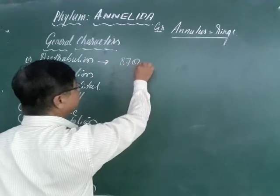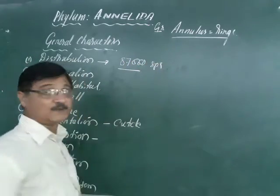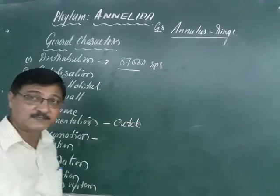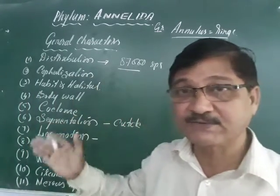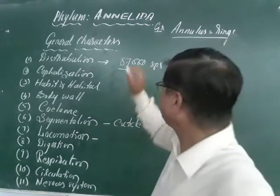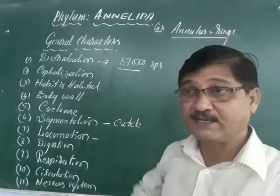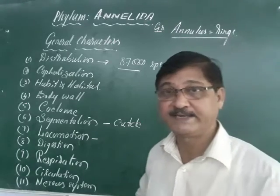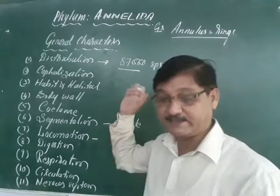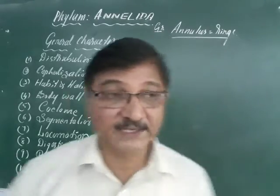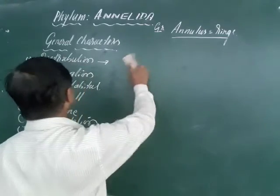Their number ranges from more than 87,000 species all over the world, including India. We are able to identify up to 87,000 so far; there are still many unidentified and unnamed annelids.